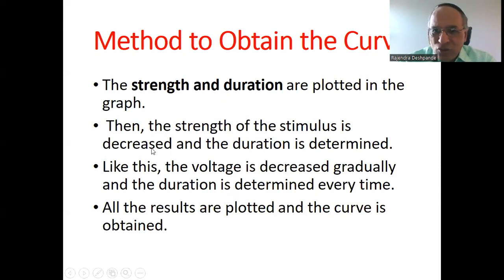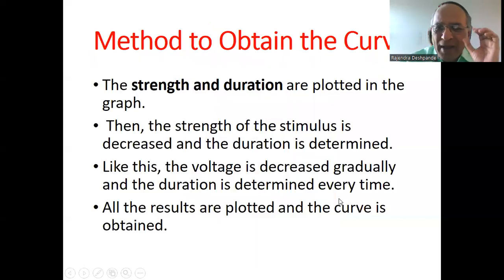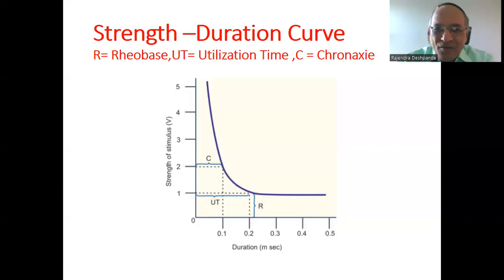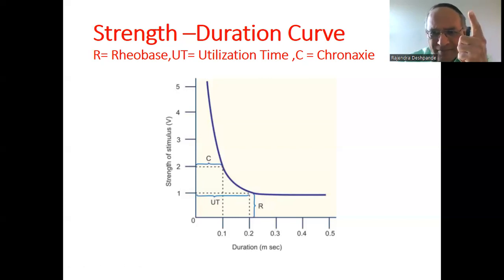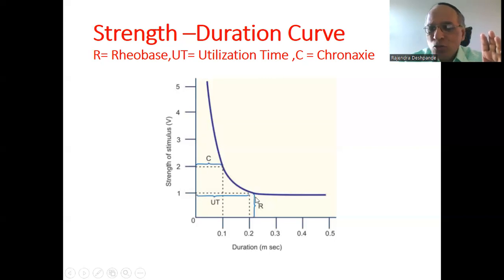The strength and duration are plotted on the graph. Then the strength of the stimulus is decreased gradually — 5 volt, 4 volt, 3 volt, 2 volt, 1 volt — and the duration is determined each time. All results are plotted and the curve is obtained. As you can see, when the voltage is reduced, the duration required to get a response becomes more and more. The shape of the curve is similar in almost all excitable tissues.